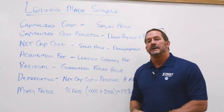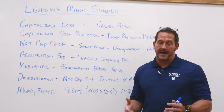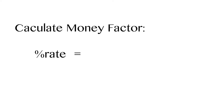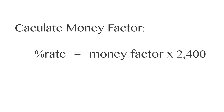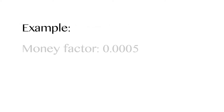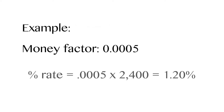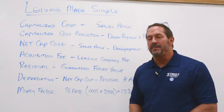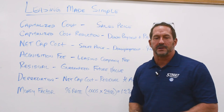The last thing we'll talk about is the money factor. The money factor is the interest rate, and it's very easy to calculate. The money factor multiplied by 2,400 will give you the effective interest rate. So a money factor of .0005 times 2,400 comes to a 1.2% interest rate. As you can see, fairly simple. Whoever devised this tried to make it a little tricky with fancy terms, but overall they're just pretty simple terms.